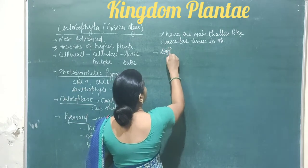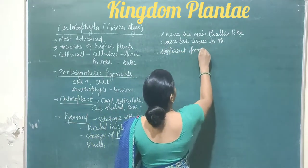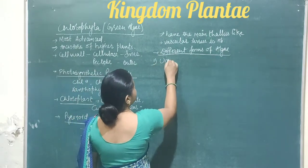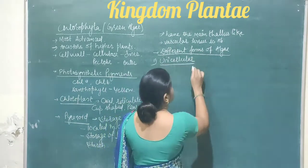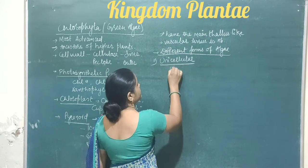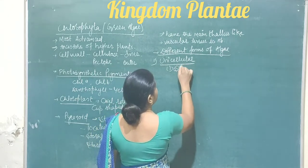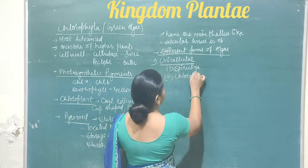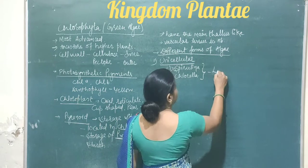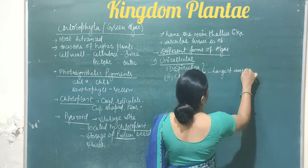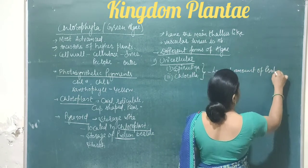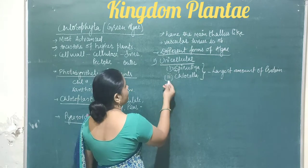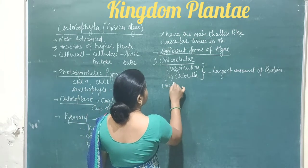Now, different forms of green algae. The first form is unicellular. Examples of unicellular algae are Spirulina and Chlorella. They contain the largest amount of protein, meaning they are chiefly composed of protein, so they are used as single cell protein.